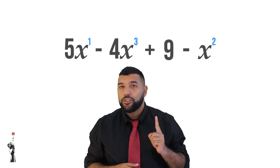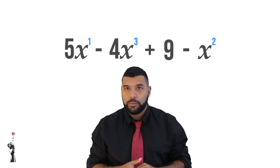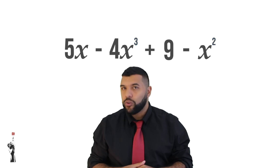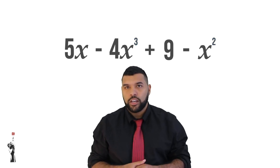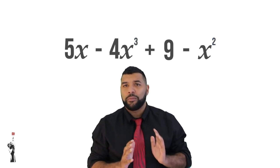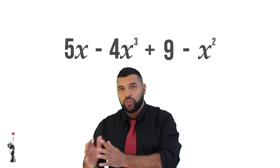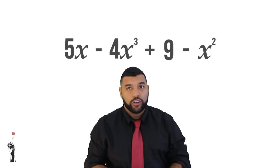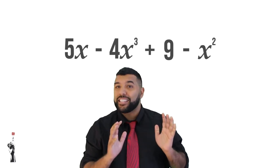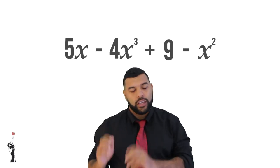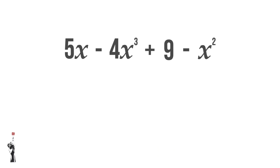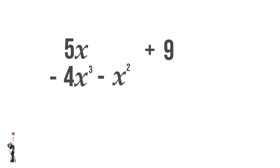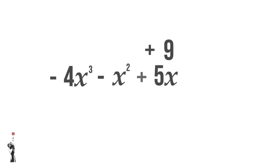So what we're first going to do is rewrite this expression in the descending order of X. Descending order means to go from the biggest to the smallest — start with the X with the biggest exponent down to the smallest. So we rewrite this as negative 4X cubed minus X squared plus 5X plus 9. Now we are ready to answer any of the questions.